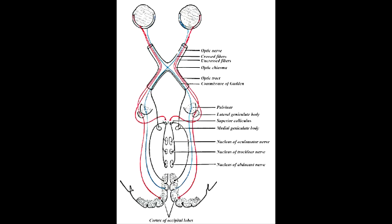What would be the end result in right optic tract damage? Right optic tract damage would lead to left homonymous hemianopia. So basically in this you would not be able to see on the left side of both the eyes.